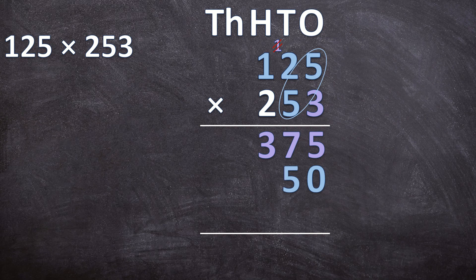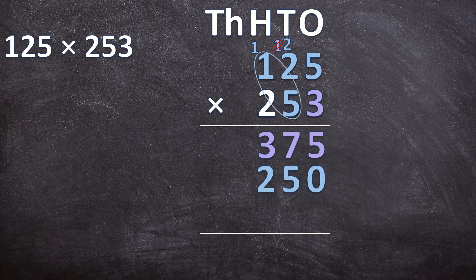It was important to cancel that 1 because now there has to be a 2 carried. Next, 2 times 5 is 10, plus the carried 2 is 12 — write down 2 and carry the 1. Lastly, 1 times 5 is 5, plus the carried 1 is 6. So 50 times 125 is 6,250.